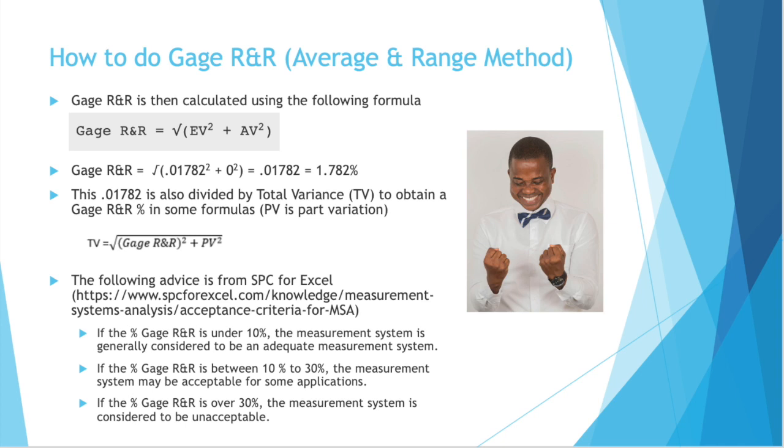To then get the gauge R&R value, it's the square root of repeatability squared, ev squared, plus our reproducibility squared, av squared. So it's the square root of 0.01782 squared, plus zero squared, which gets us 0.01782, because we squared it and took the square root. Or you can think of that as 1.782 percent.